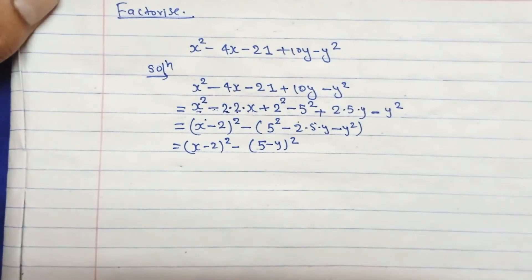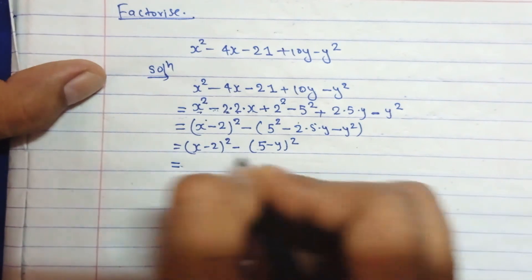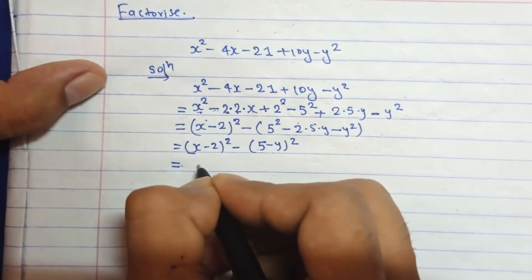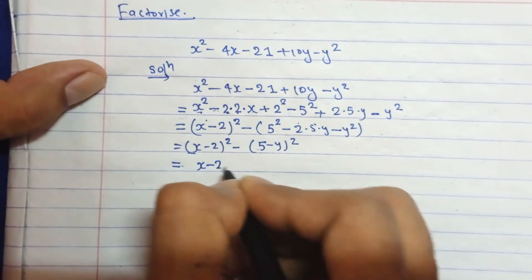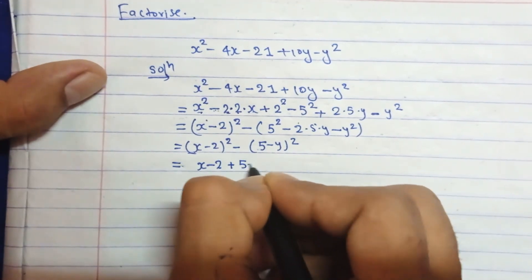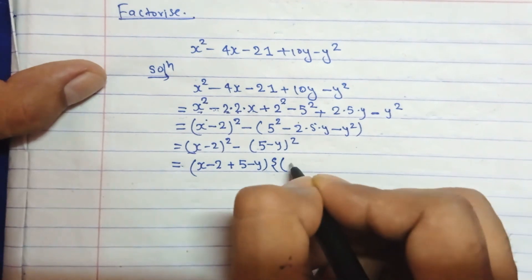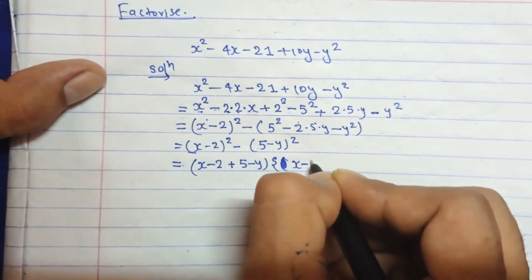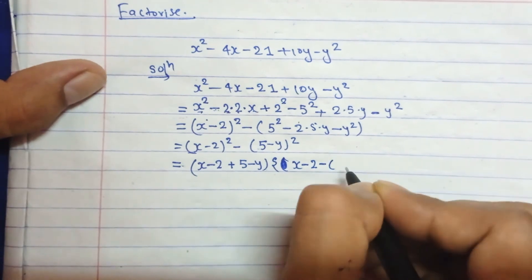Okay, then now apply the formula a² - b². Suppose this is a and this is b, then you can write here (a + b) and (a - b).